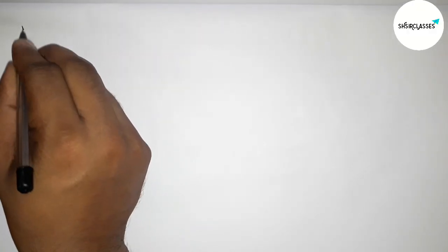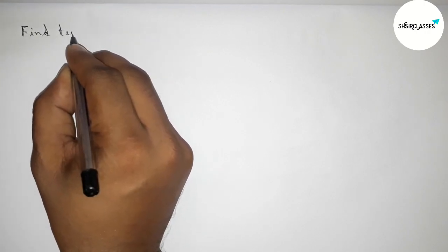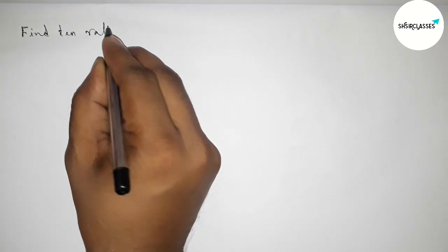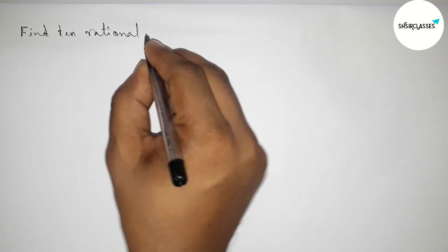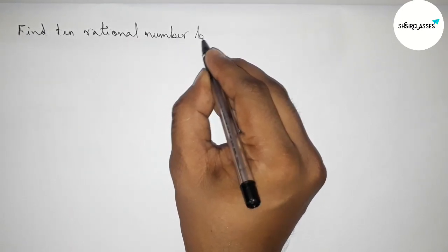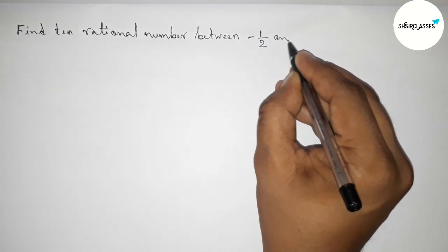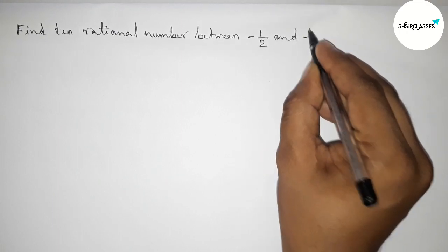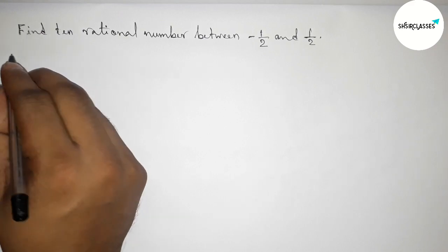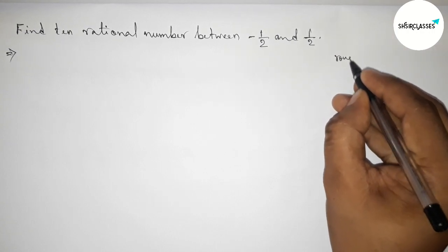Hi everyone, welcome to a Size Share class. Today in this video we have to find 10 rational numbers between minus 1 by 2 and 1 by 2 in an easy way. Please watch the video till the end. Let's start — first of all let us solve this problem, discussing some important calculations.